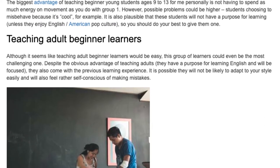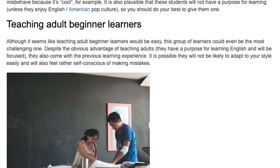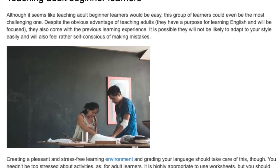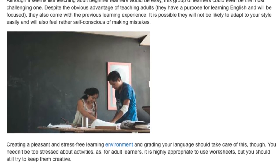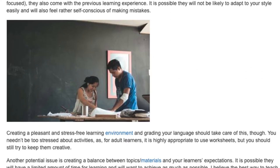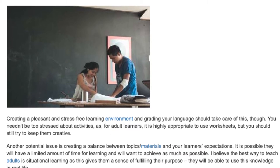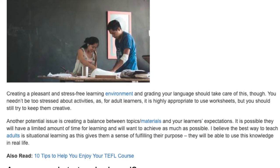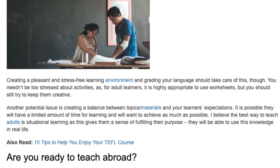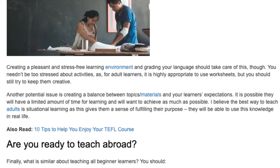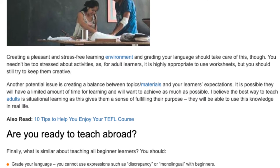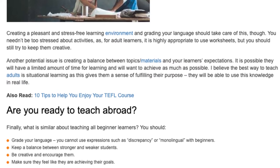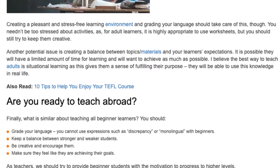Teaching Adult Beginner Learners: although it seems like teaching adult beginner learners would be easy, this group could even be the most challenging one. Despite the obvious advantage that adults have a purpose for learning English and will be focused, they also come with previous learning experience. It is possible they will not adapt to your style easily and will feel rather self-conscious about making mistakes. Creating a pleasant, stress-free learning environment and grading your language should take care of this. Worksheets are highly appropriate for adult learners, but you should still keep them creative. A potential issue is balancing topics, materials, and learners' expectations, as they may have limited time and want to achieve as much as possible. I believe the best way to teach adults is situational learning, as this gives them a sense of fulfilling their purpose — they will be able to use this knowledge in real life.